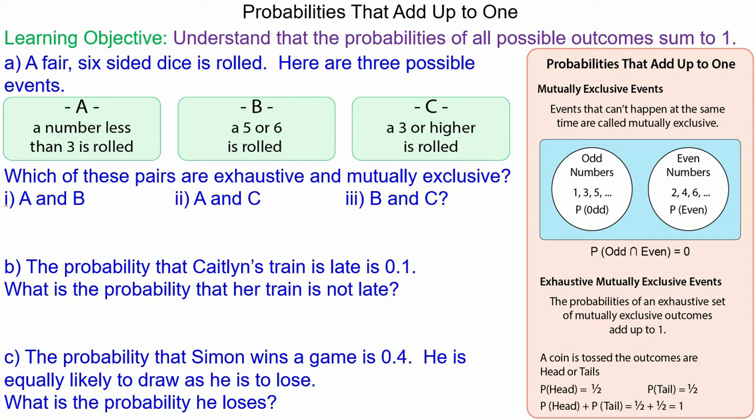So a fair 6 sided dice is rolled, and event A is getting a number less than 3, which is a 1 or a 2. Event B is a 5 or 6, and event C is 3 or higher, which is 3, 4, 5 or 6.